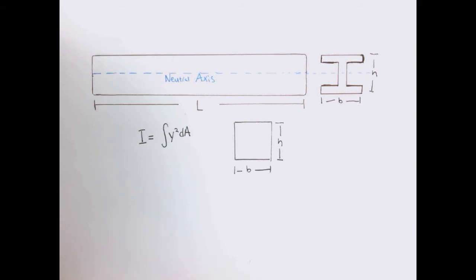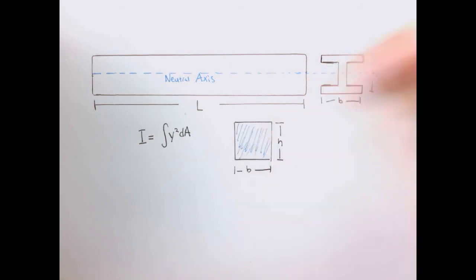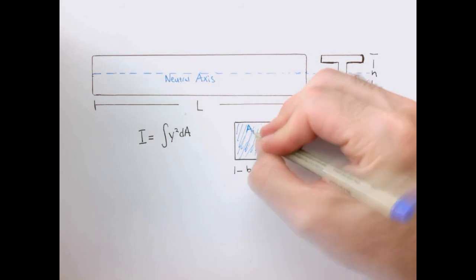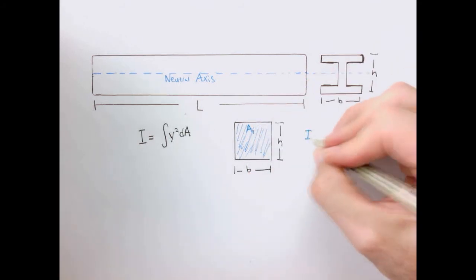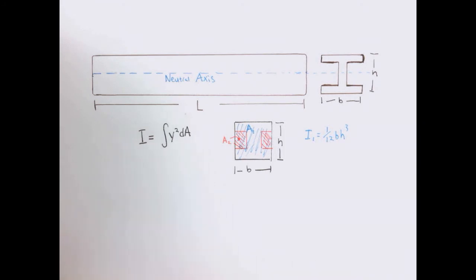So let's consider a cross-sectional shape that has the same width and same height as our I-beam. And I'm going to call this area 1. So moment of inertia 1, in this case, is nothing more than one-twelfth bh cubed.